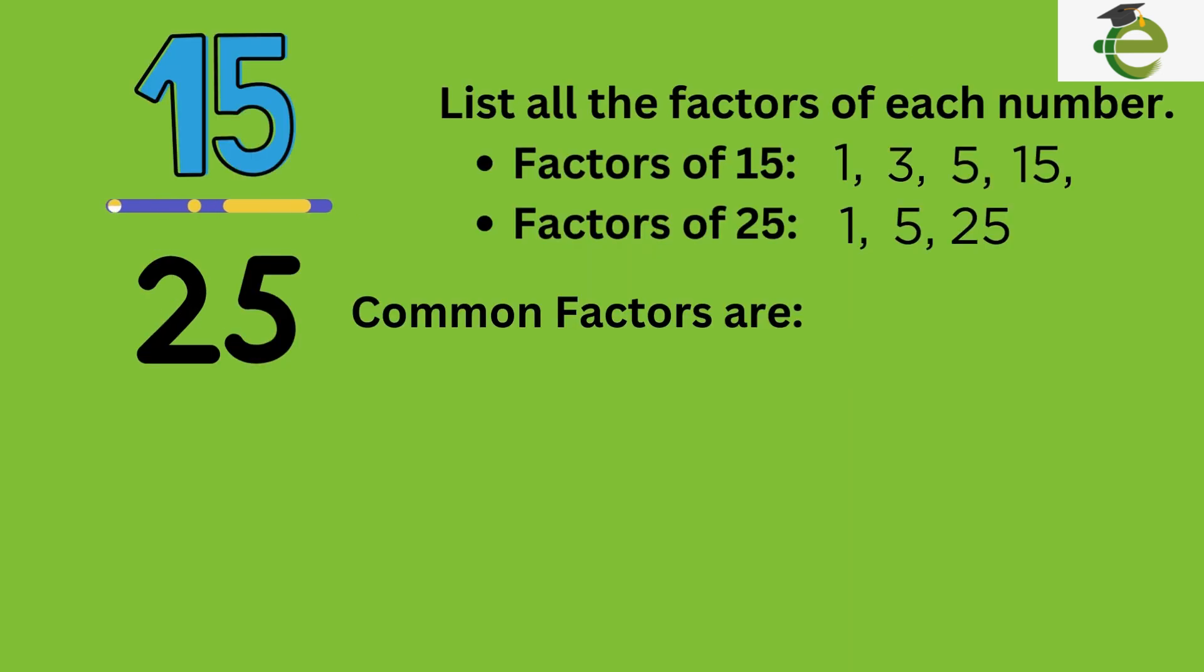For example, to simplify fifteen-twenty-fifths, find the greatest common factor of fifteen and twenty-five, which is five. Common factors of fifteen and twenty-five are one and five. So, the greatest common factor would be five.